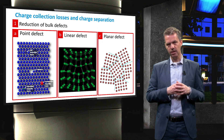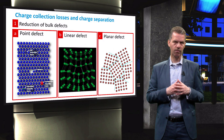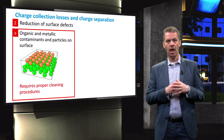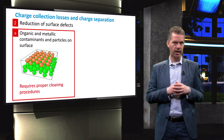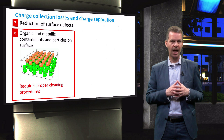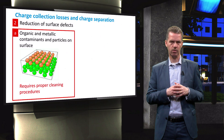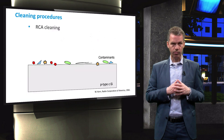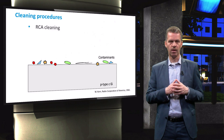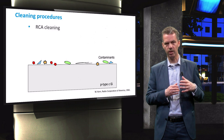Defect densities can be minimized by carefully controlling the ingot fabrication and working in a clean environment. To reduce the recombination rate at the surface, it is very important to clean the wafer thoroughly and remove organic and metallic contaminants and particles. One of the standard cleaning procedures is RCA cleaning. This figure shows a schematic of a crystalline silicon wafer surface with contaminants on it.